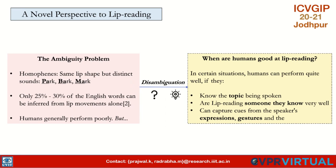The problem of inferring information from lip movements is ill-posed. The same set of lip movements can map to different words — for example, the words 'park,' 'mark,' and 'bark' are classic homophones. Humans generally perform this task poorly; however, they do better under certain conditions such as prior knowledge about the topic being spoken, familiarity with the person, and cues like gestures and expressions.